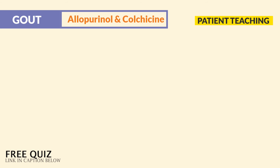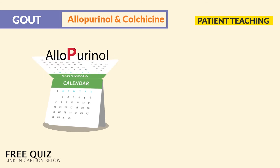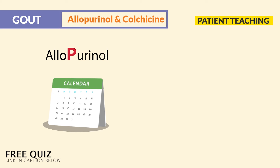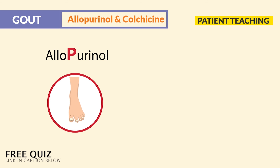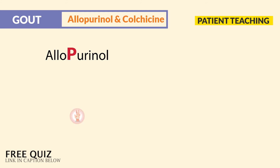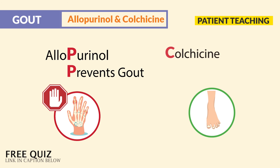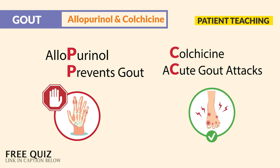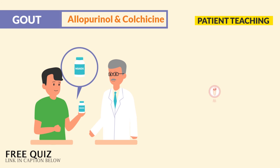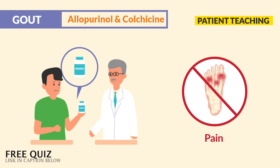Patient teaching for allopurinol is that it may take several months to work — this was mentioned by only one question bank. And again, it's not for acute attacks. Remember, the P in allopurinol prevents long-term gout, and the C in colchicine is for acute attacks. And lastly, NSAIDs are for pain during those attacks.